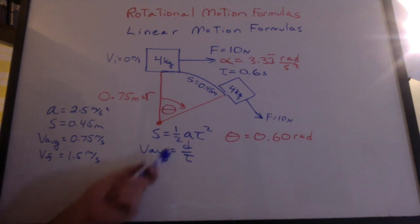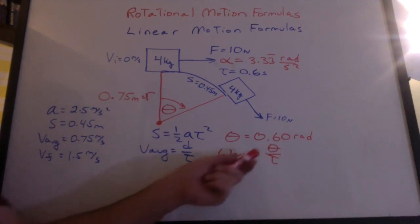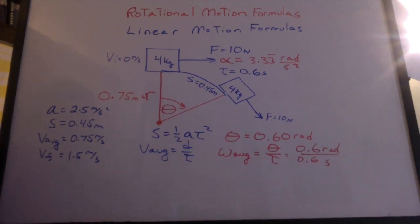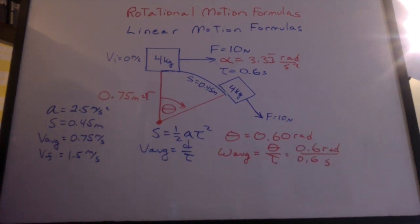Just like saying v average is a distance over a time, we can say omega average is a theta per time. 0.6 radians in 0.6 seconds, and we have 1 radian per second.